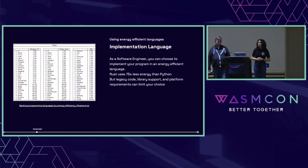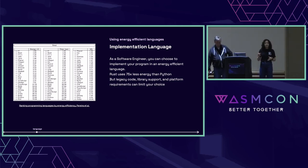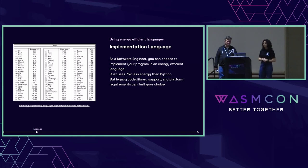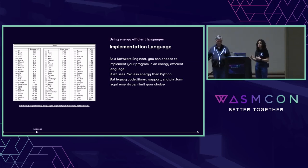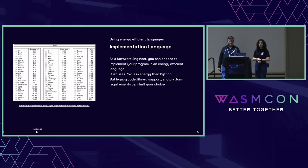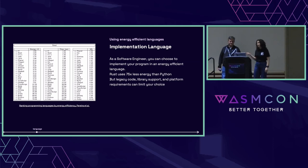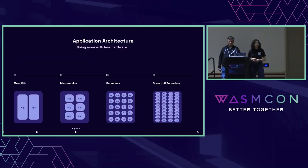There was research updated most recently in 2021 that took the same program and implemented it across various programming languages, then observed how much energy was used in each. It found that implementing your application in a language such as Rust would make it use 75 times less energy than implementing it in a language such as Python. However, we don't always get to choose what language we implement our code in — sometimes we're using legacy code, are tied to certain libraries, or maybe our company just doesn't use that language.